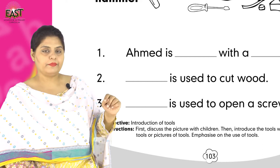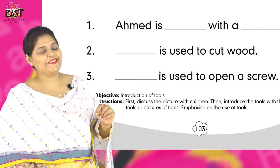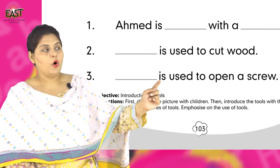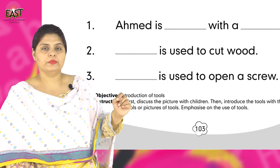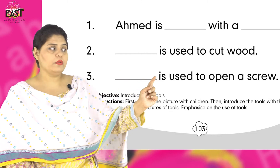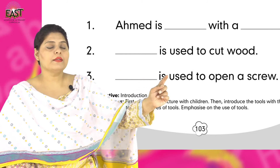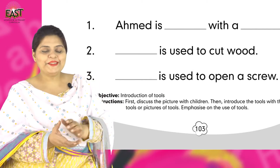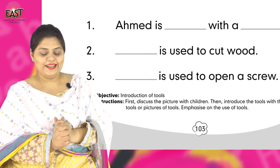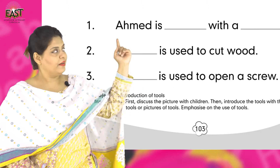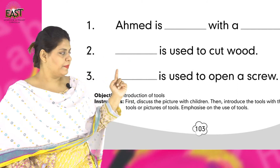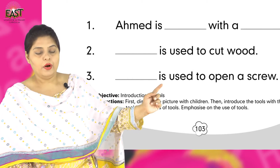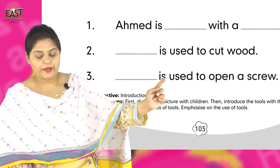Now look at your next blank: dash is used to open a screw. Dash is used to open a screw. Screw kholnye ke li hai ham kya use kerti hai? Screwdriver. Well done. So you can write screwdriver — screwdriver is used to open a screw.